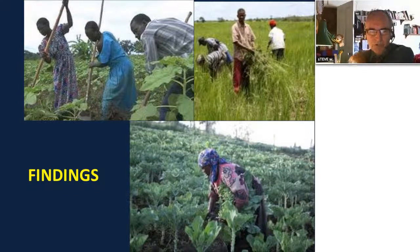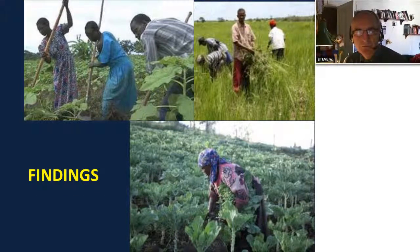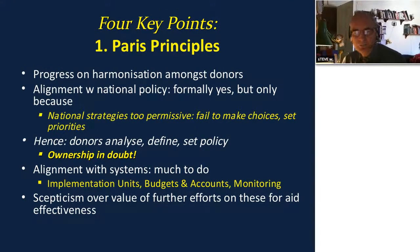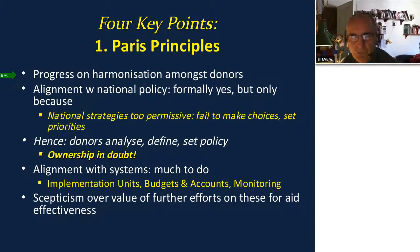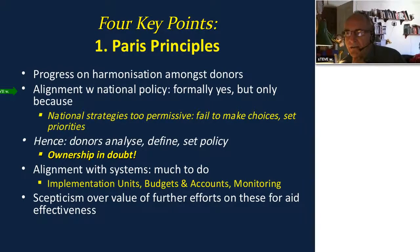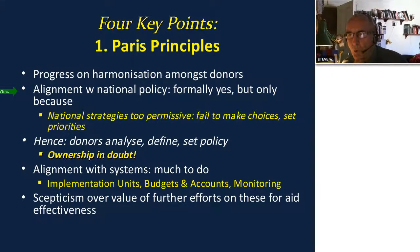What are the main findings? Four key points arise. The first looks at the Paris Principles. There has been a lot of activity since 2005 to improve harmonization amongst donors. At the country level, across the 16 programs we examined, you could almost always check the box saying these are aligned with national policy — formally, they were. But the problem was that national strategies were way too permissive.